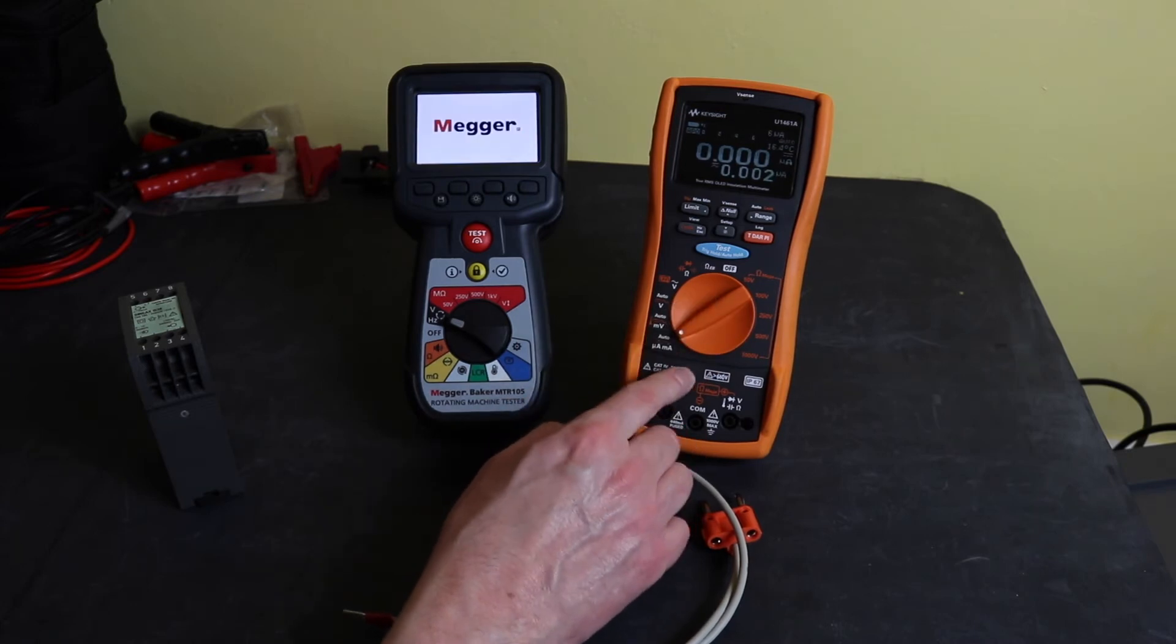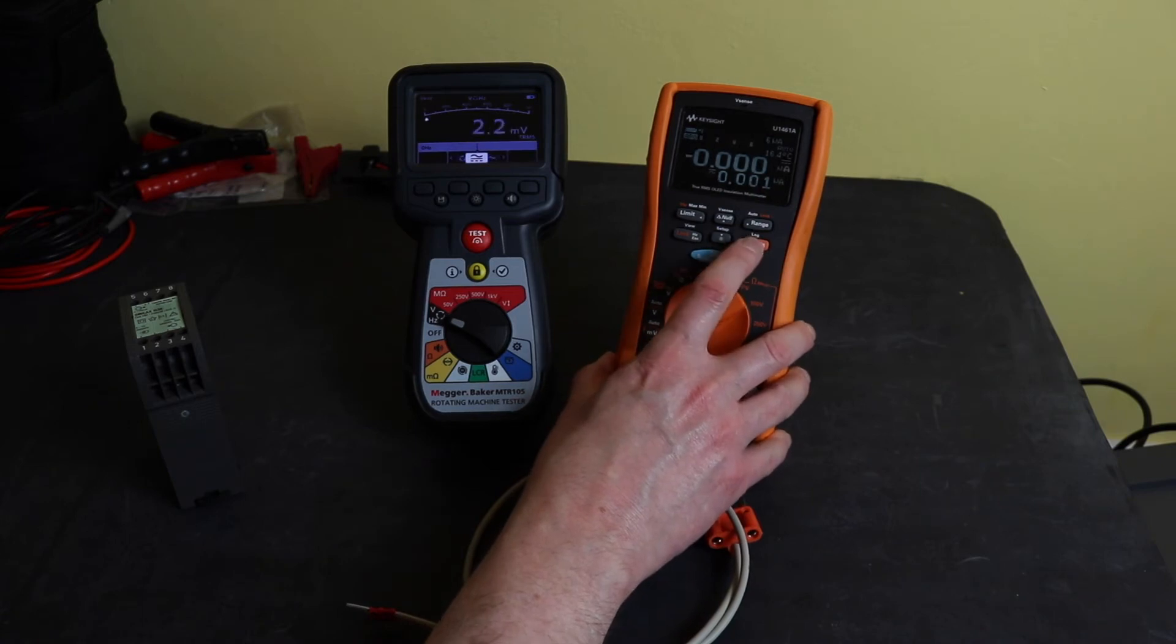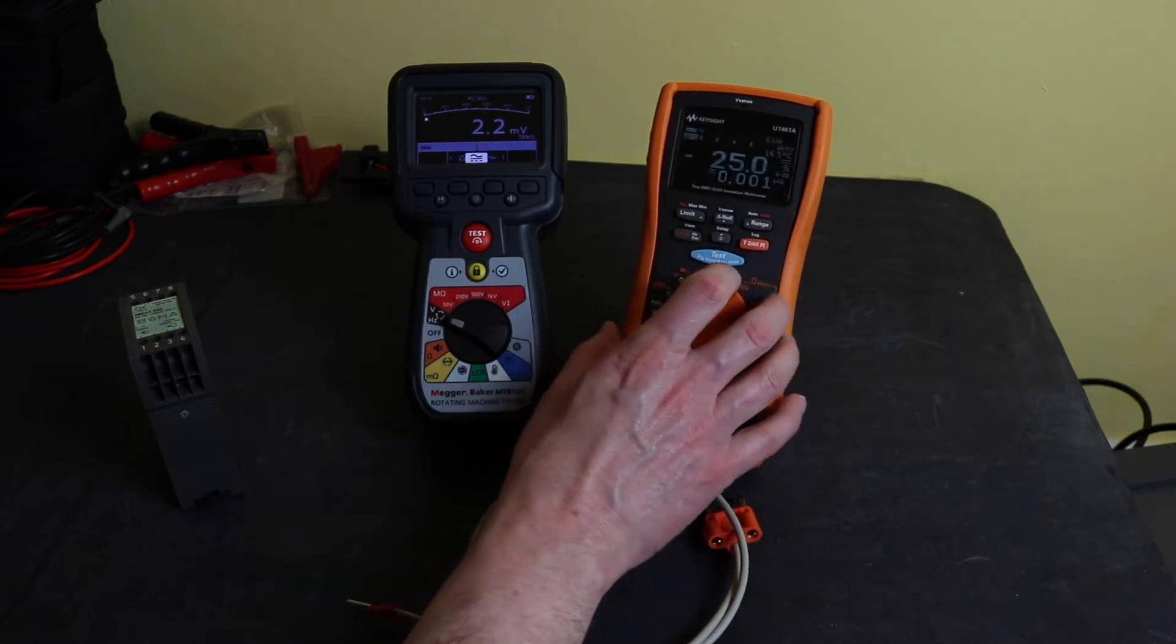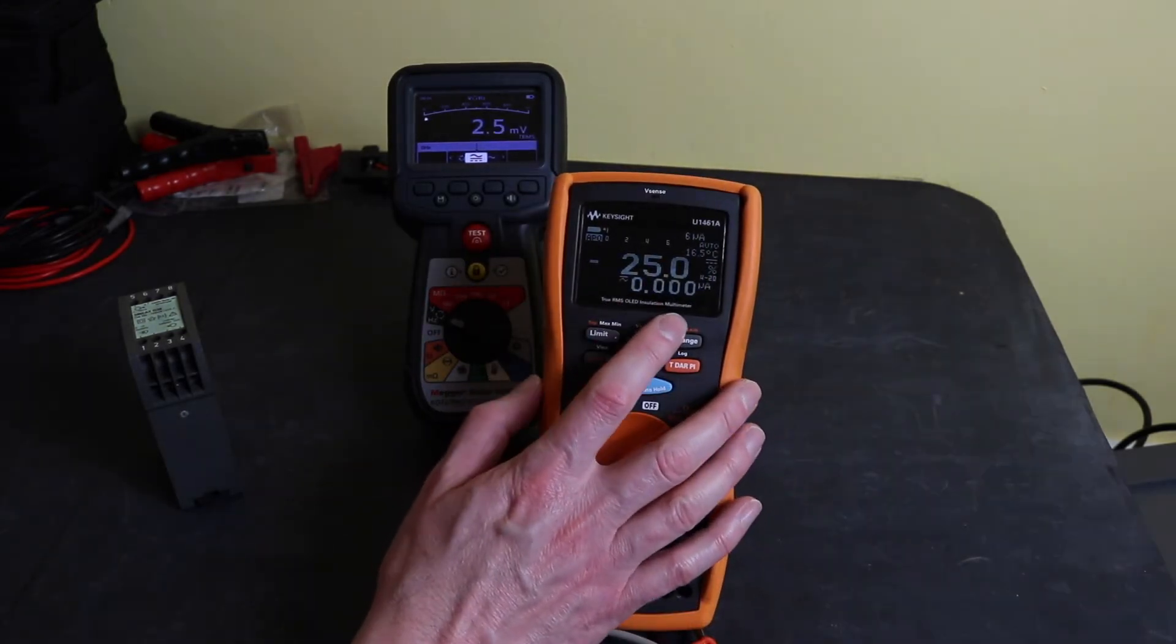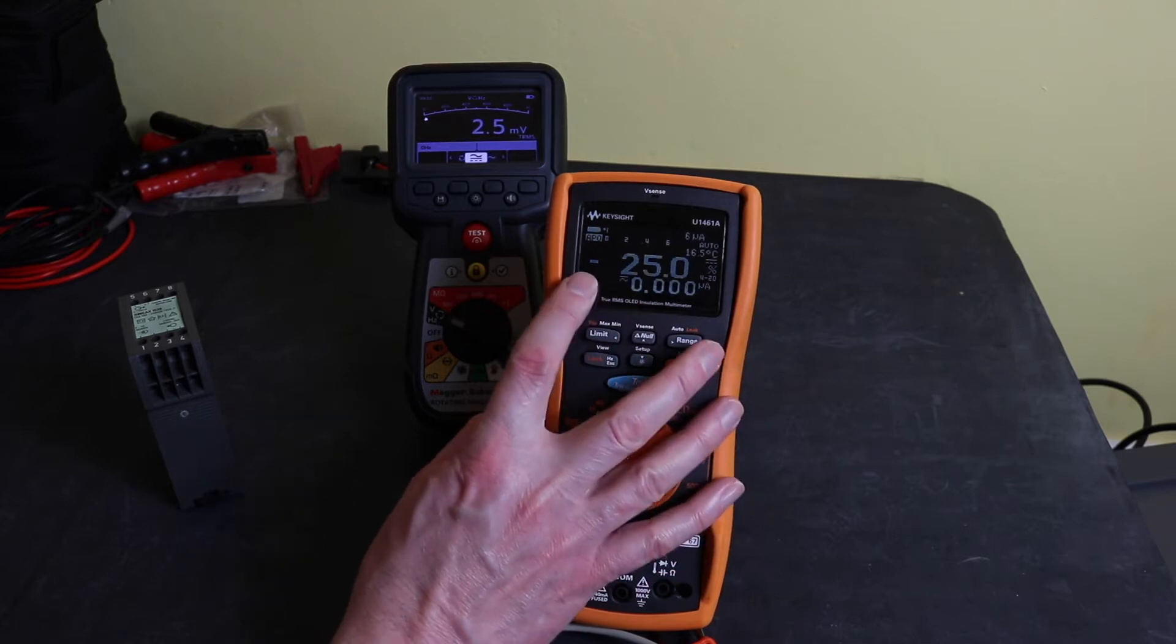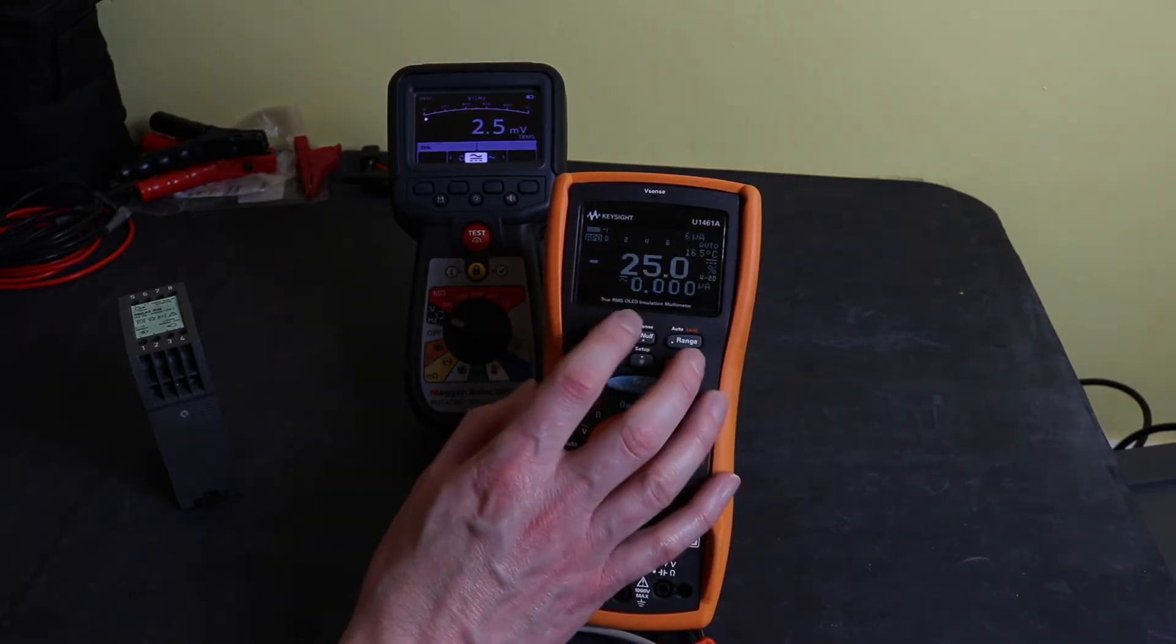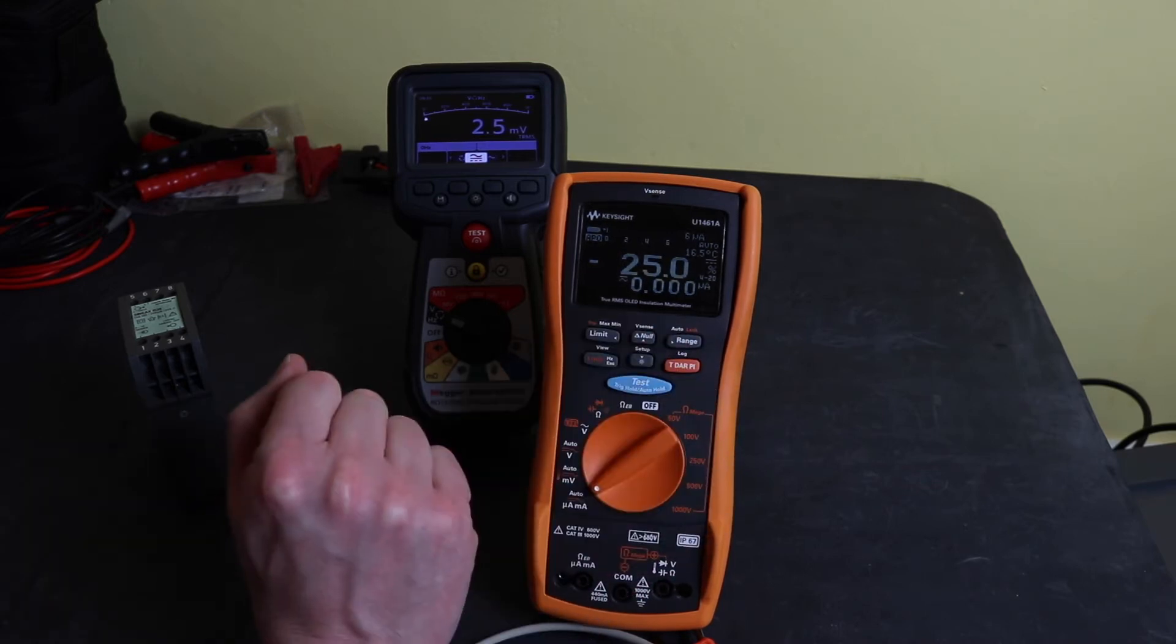But this instrument here also has, you have to set it up in the menus but it has a special 4 to 20 milliamp loop checking function which I've got on here now. If I bring him in a bit closer, you see at this moment time it's displaying 0 milliamps input at the bottom and at the top I've got minus 25 percent. That's because it's looking for the 4 to 20 milliamp and it obviously isn't finding it until I connect it up.